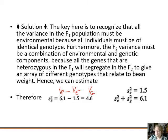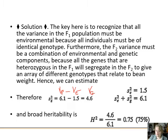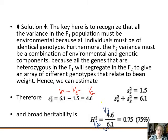So VG equals 4.6, and broad sense heritability H² equals VG divided by VP. In this case that's approximately two-thirds, or around 0.75. We're going to say over 0.5 is high and below 0.5 is low, so this particular trait is highly heritable.